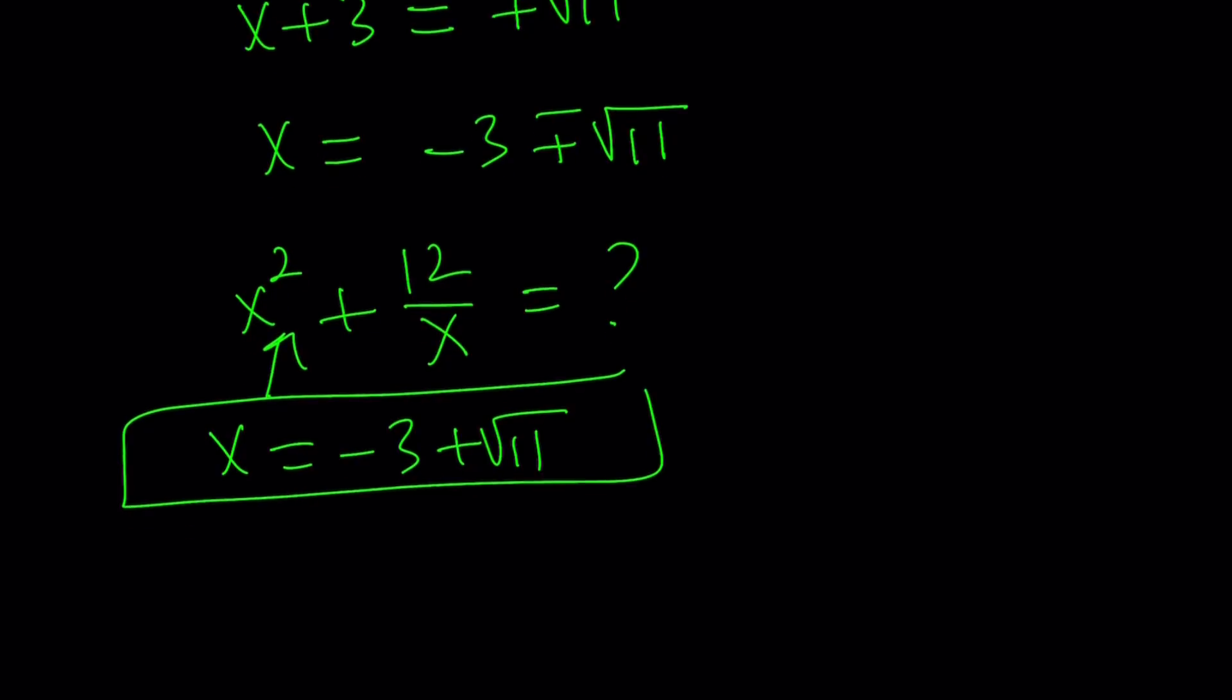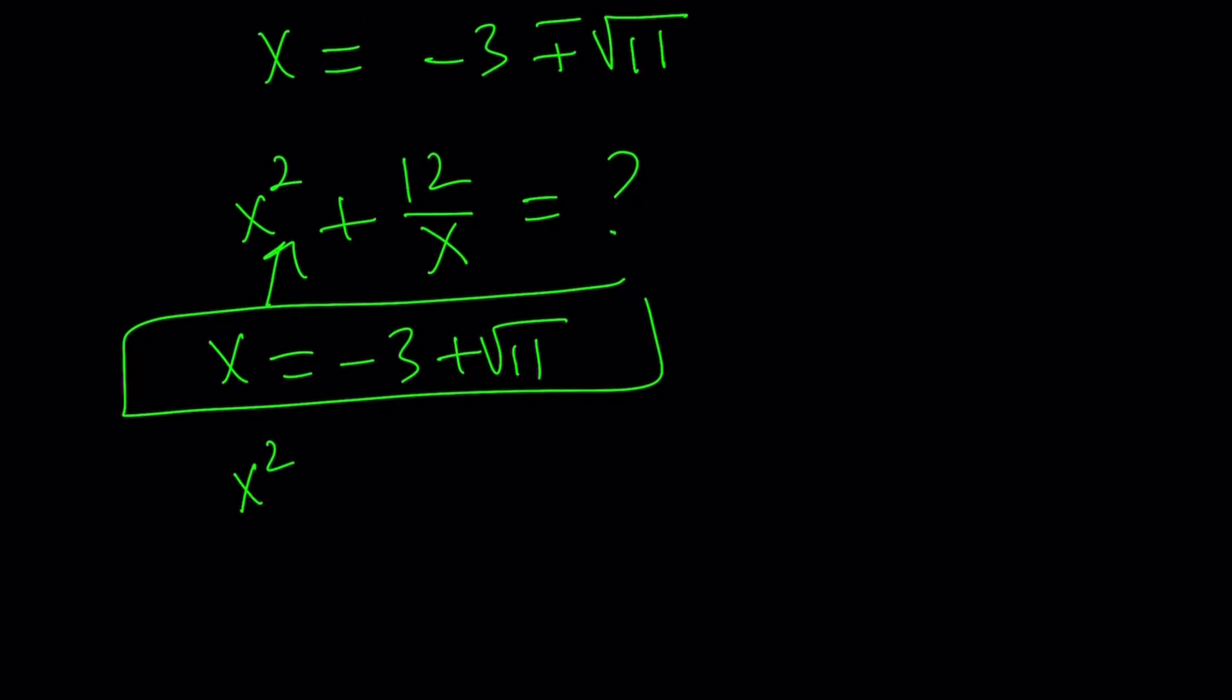So I got to find x squared first. Let's find x squared. I'm going to square this 9. And then since this is kind of, well, I can just write it like this. 9 plus 11, and then minus 6 root 11. That's going to give me 20 minus 6 root 11. That is x squared.